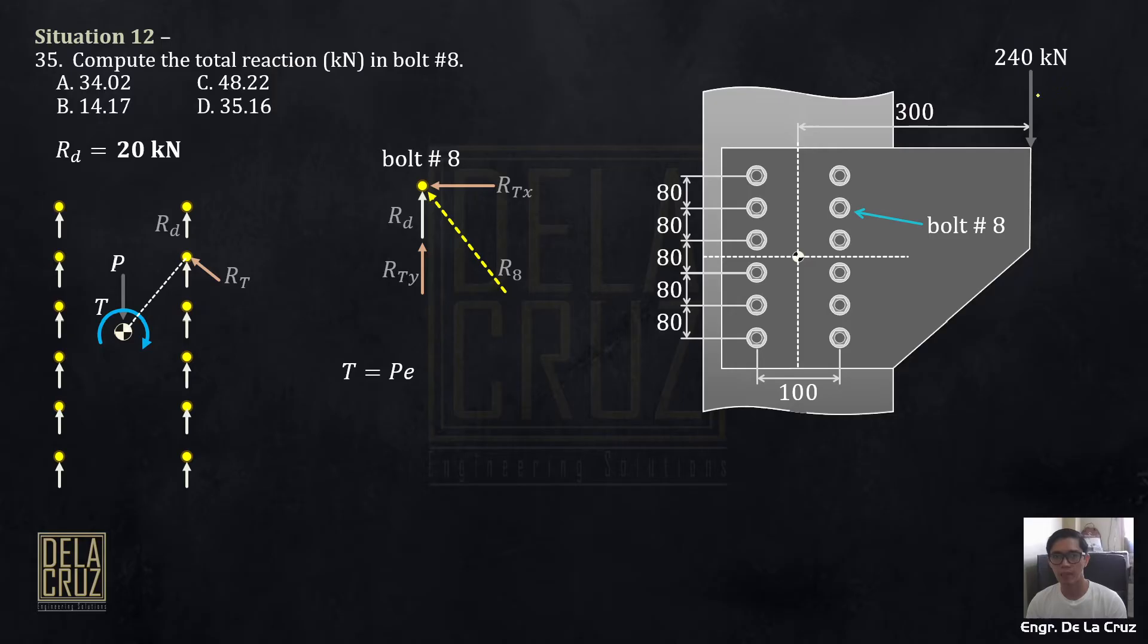Again, because of that moment, it should counter the moment reaction there. Okay? In this case, the two will add. So, we need the T. The T is P times E for this case. Our P, let's make it newtons. Our T. That will give us 72 times 10 raised to 6 newton millimeter. And we also need the polar moment of inertia per square millimeters or per area.